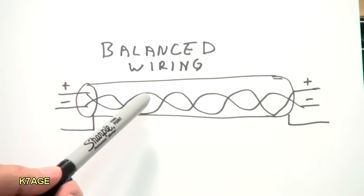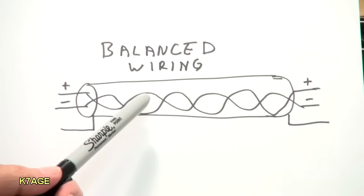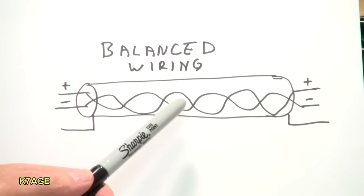The reason balanced wiring is preferred for professional audio is that any noise that would get introduced into the wiring gets introduced into both of the conductors equally. And since we're looking at the difference in the signal to be amplified, if it's the same signal on each wire, it's basically canceled out. And only the difference between the two wires is amplified. So this is really preferred for professional audio.